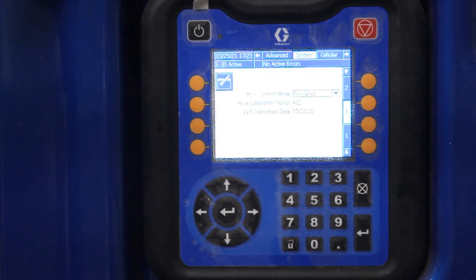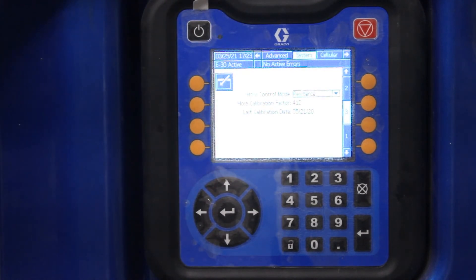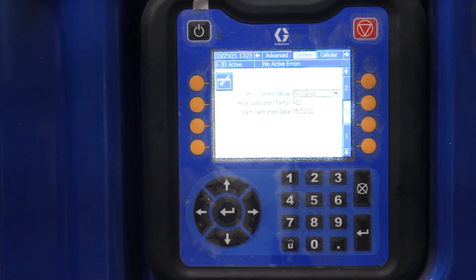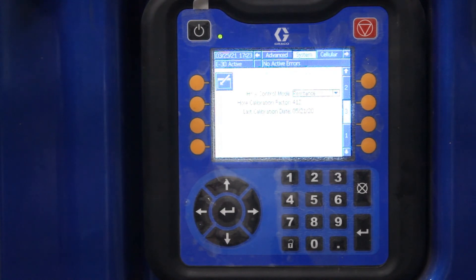This is the main screen that everybody usually worries about, is the hose control mode. Because if you have an issue, this is the one that most likely sprayers are going to be dealing with. And I don't want to change it because that means it'll have to recalibrate it in the morning.